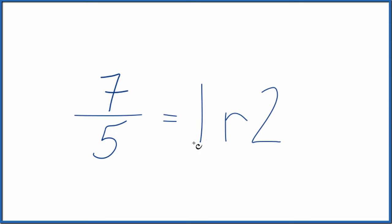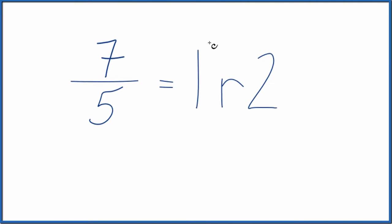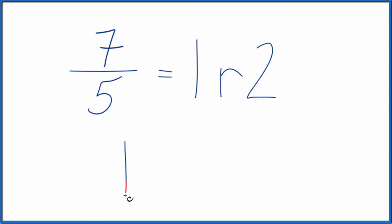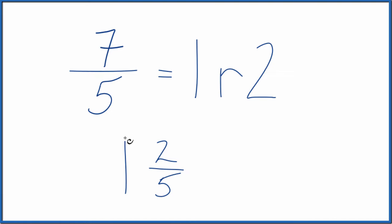So the fraction 7 fifths gives us 1 remainder 2. Now we can write our mixed number. We take the whole number here, write that, and then we write the remainder as the numerator. Bring the denominator down and we end up with 1 and 2 fifths. So the fraction 7 fifths equals the mixed number — also called an improper fraction — 1 and 2 fifths.